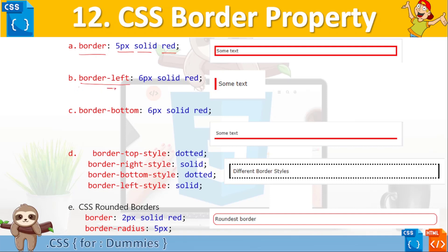Similarly you can specify border-right, border-top, and border-bottom individually. If you write border-right, the border appears only on the right side. If you write just border, all four corners of the box will have the border applied. So you can customize and specify borders around each component individually or apply them to all sides at once. For example, border-bottom applies a border only at the bottom of your content.